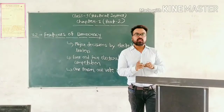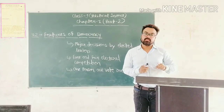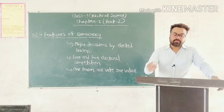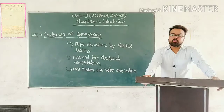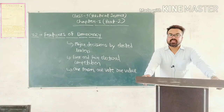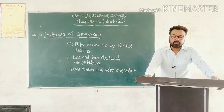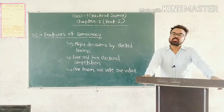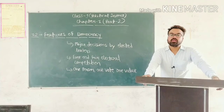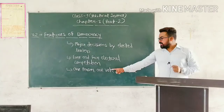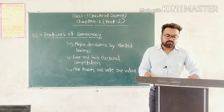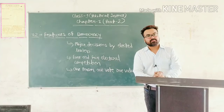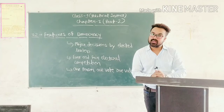Now the third feature: one person, one vote, one value. پہلے ایسا نہیں تھا — ایک person کے vote کی value دوسرے person کے vote سے زیادہ یا کم ہو سکتی تھی۔ Democracy نے اس کو ختم کیا۔ Earlier, the struggle for democracy was linked to the demand for universal adult franchise — وتیشک متادھیکار۔ Until 2015 in Saudi Arabia, women did not have the right to vote — 2015 تک Saudi Arabia کی خواتین کو vote ڈالنے کا حق نہیں تھا۔